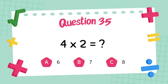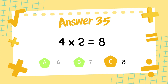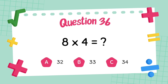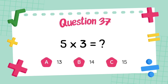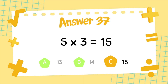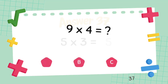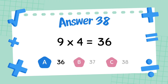What is 8 multiply 4? What is 8 multiply 4? The answer is 32. What is 9 multiply 4? What is 9 multiply 4? What is 6 multiply 4? The answer is 36.